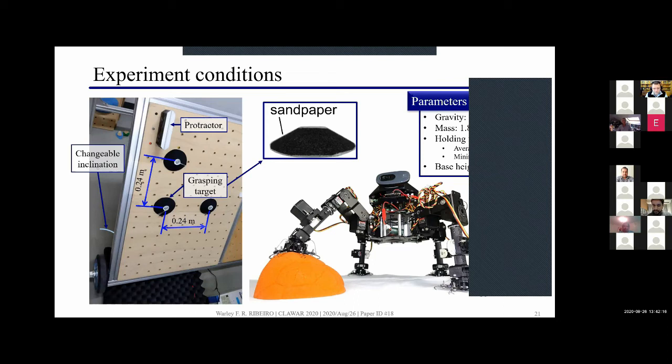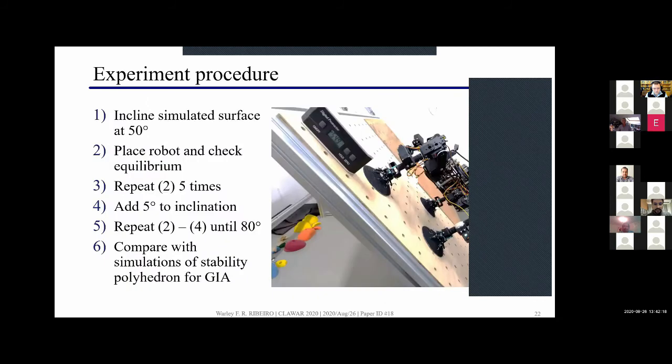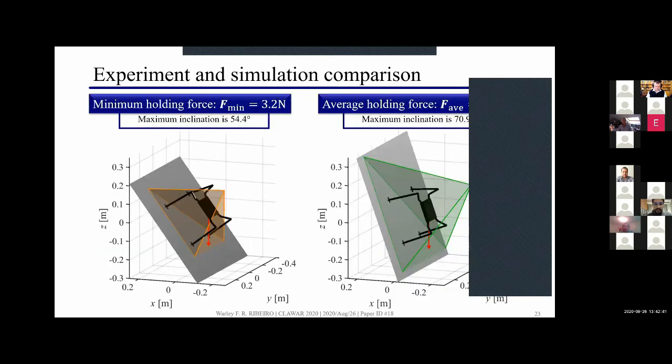Here talking about the experiment I conducted, we aim to see if the robot is in equilibrium or not for the given inclination. I placed the robot a few times on a fixed inclination and checked if he was tumbling or not, repeating for different inclinations. I compared that with the results from the theory of the stability polyhedron. Here I simulated the stability polyhedron and compared to the GIA vector to obtain the maximum inclination. Considering the minimum holding force I got an inclination of 54.4 degrees and for the average I got an inclination of 70.9 degrees.